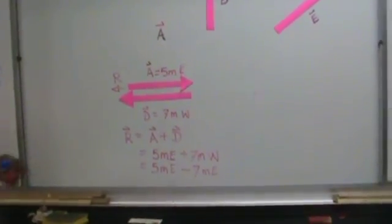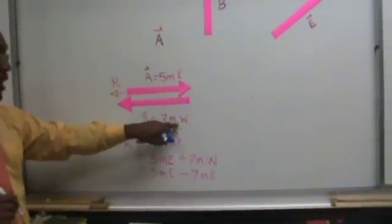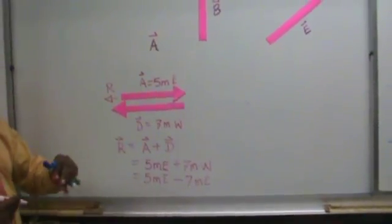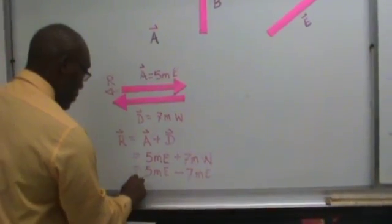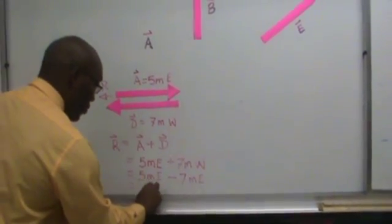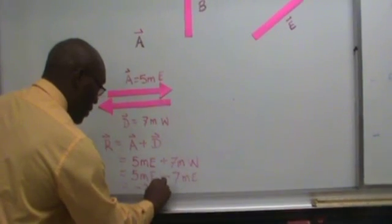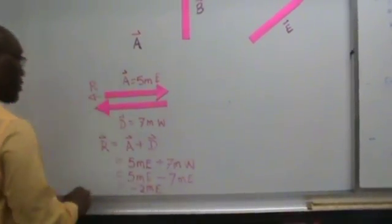What am I actually saying? I'm saying that 7 meters west is the negative of 7 meters east. What is this going to give us? It is going to give us negative 2 meters east as a resultant.